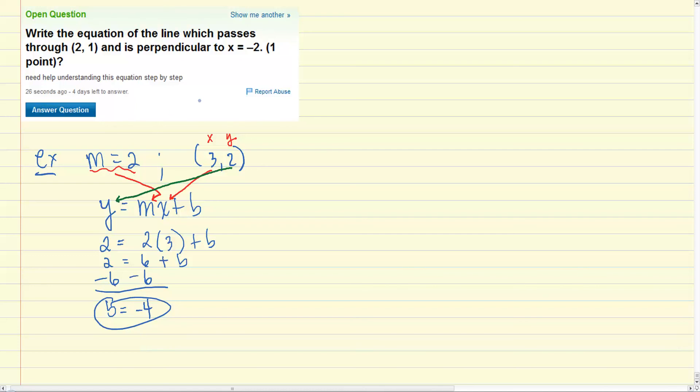What we do then is that means that our equation that passes through this point with the slope 2 is going to be y equals 2x minus 4. Okay, so that's the first thing.